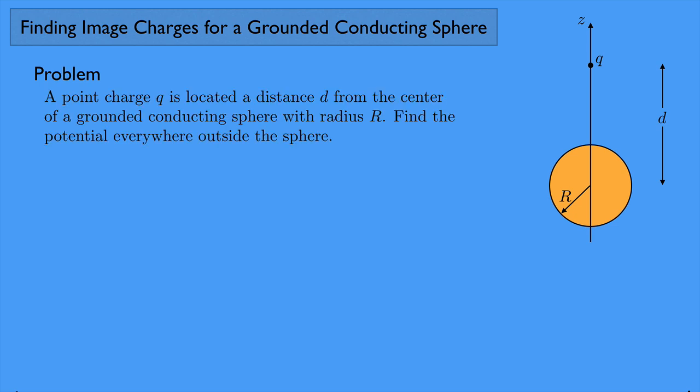Let's look at the boundary conditions. We know it's a grounded conducting sphere, so on the sphere V equals zero — the potential is zero. Also, at infinity, V approaches zero. As we get further and further away from the sphere, we would expect that V should approach zero.